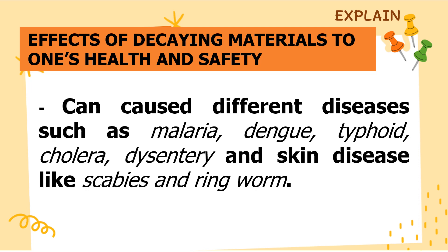Another effect of decaying materials on one's health and safety is it can cause different diseases such as malaria, dengue, typhoid, cholera, dysentery, and skin diseases like scabies and ringworm. Malaria and dengue are diseases spread by specific types of mosquitoes. For dengue, it is the Aedes aegypti mosquito. While in malaria, it is the female Anopheles mosquito.